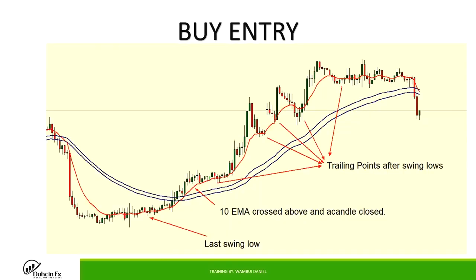For a buy entry, wait for the 10 EMA to cross above both 50 EMAs and a candle to close. You can see here the red 10 EMA crossed above the two 50s and a candle closed, showing you to enter buy. Put your stop loss under the last swing low — you can see a small swing low here — somewhere maybe 10 to 20 pips below.